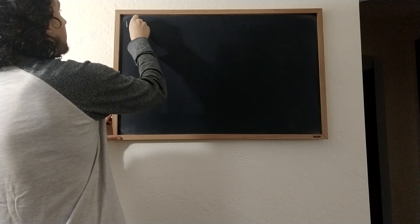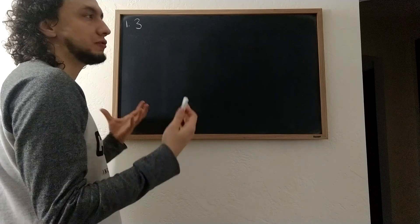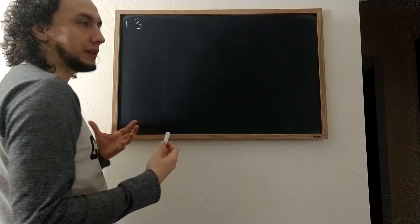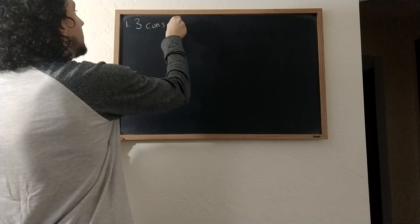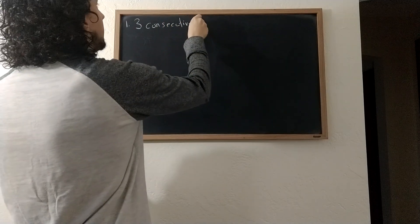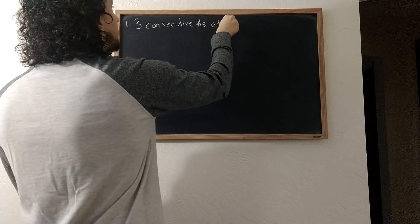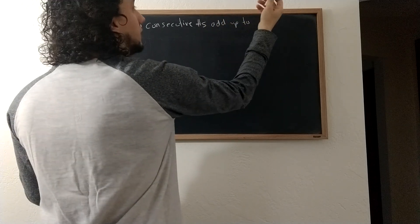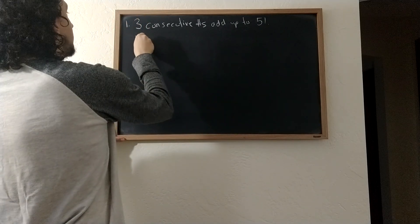So one example is sort of a standard question that you might find in an introductory lesson on using equations, and that might be something like three consecutive numbers add up to, let's say, 51. What are the numbers?